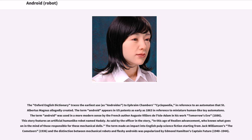The term android appears in U.S. patents as early as 1863, in reference to miniature human-like toy automatons. The term android was used in a more modern sense by the French author Auguste Villiers de l'Isle-Adam in his work Tomorrow's Eve, 1886. This story features an artificial human-like robot named Hadaly.